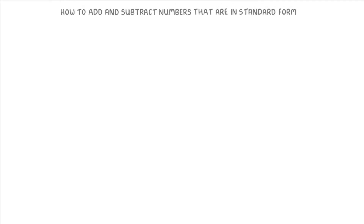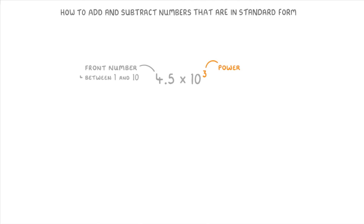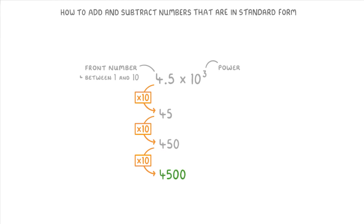In this video we're going to cover how you can add and subtract numbers that are in standard form without using a calculator. To very quickly recap, standard form numbers look like this, with the 4.5 being called the front number, which has to be between 1 and 10, and the 3 being the power. This number means 4.5 times 10 three times, so it has an actual value of 4,500.